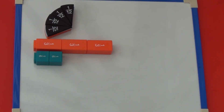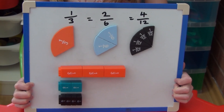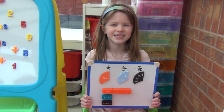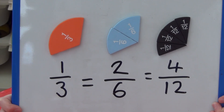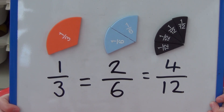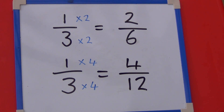Again we can do the same with the cubes. One third equals two sixths and four twelfths. If we look at the numerator and the denominator for each one, the numerator is always exactly one third of the denominator. One is a third of three, two is a third of six, and four is a third of twelve. If we look at one third and two sixths, we have multiplied both the one and the three by two. If we look at one third and four twelfths, we have multiplied both the one and the three by four.